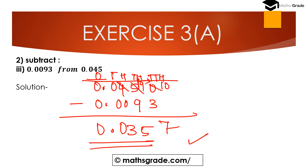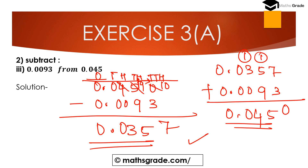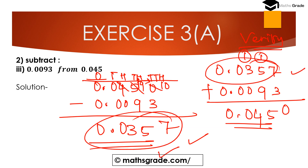To verify, add 0.0357 with 0.0093. 7 plus 3 is 10, carry 1. 1 plus 5 is 6, 6 plus 9 is 15, carry 1. 1 plus 3 is 4. Result is 0.0450. This confirms our answer. So subtracting 0.0093 from 0.045 is 0.0357.